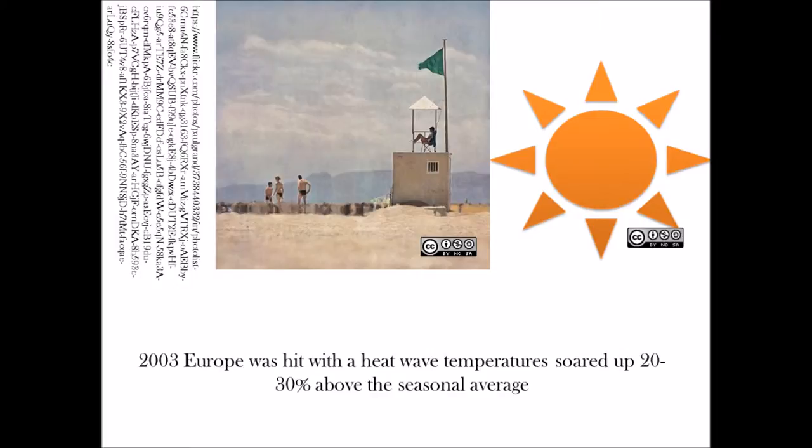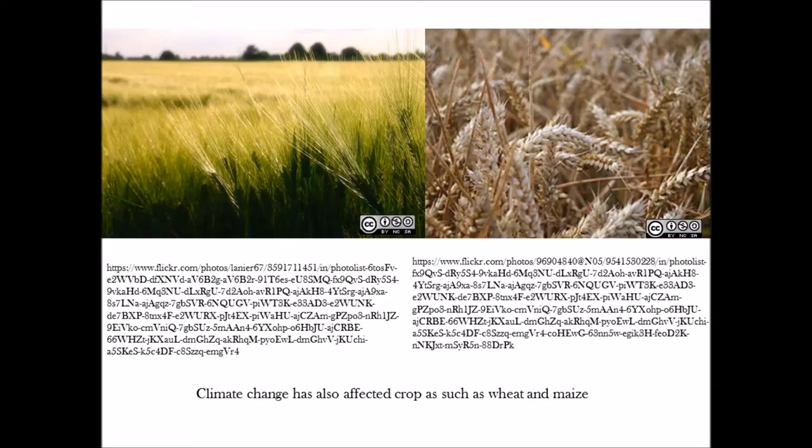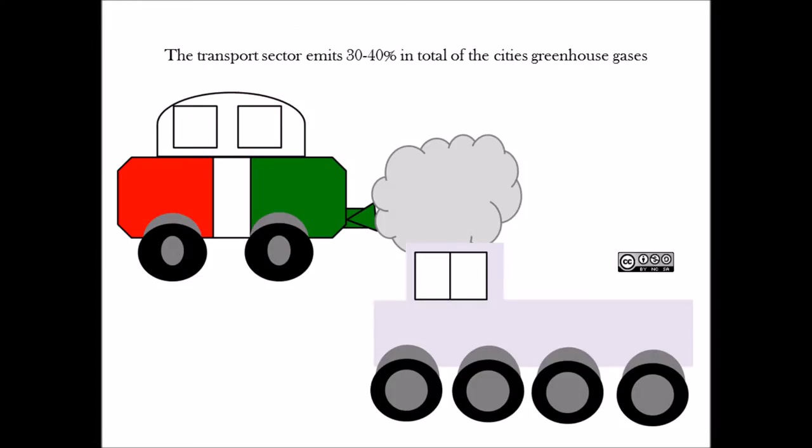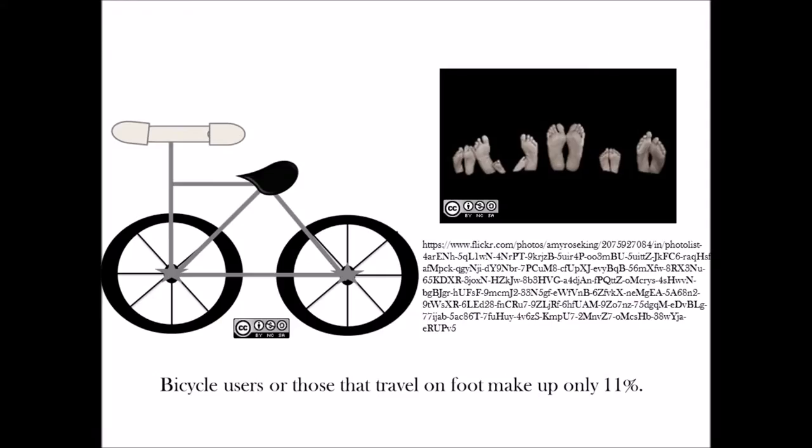It greatly affected crops such as wheat and maize which accounts 2.8% of the GDP in Hungary. More than 80% of the land is an agro-ecosystem which means the agriculture sector is vulnerable to climate change. The transport sector is also responsible for emitting 30-40% in total of the city's greenhouse gases due to the 3 million daily travels with public transport of the total 5 million day-by-day travels whilst bicycle users or those who travel on foot only make up 11%.